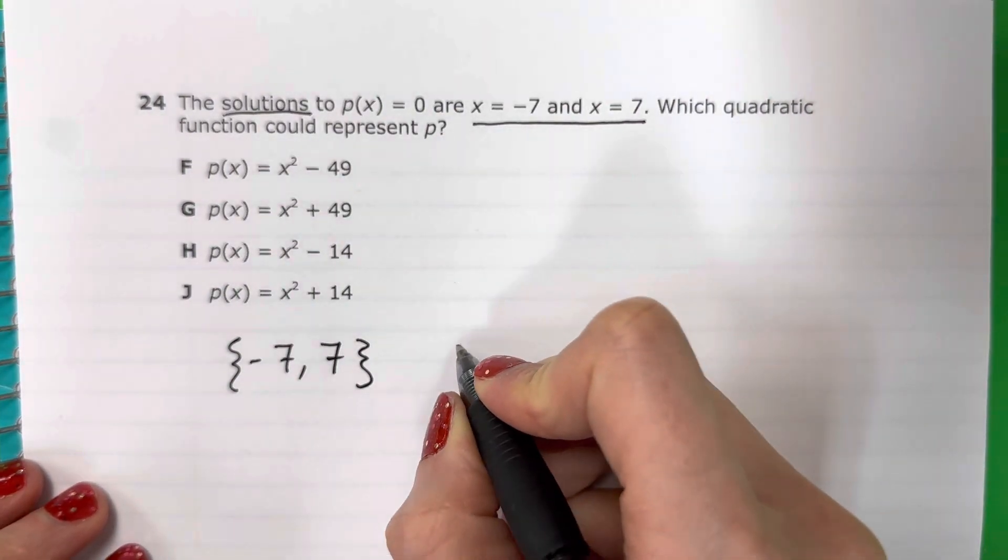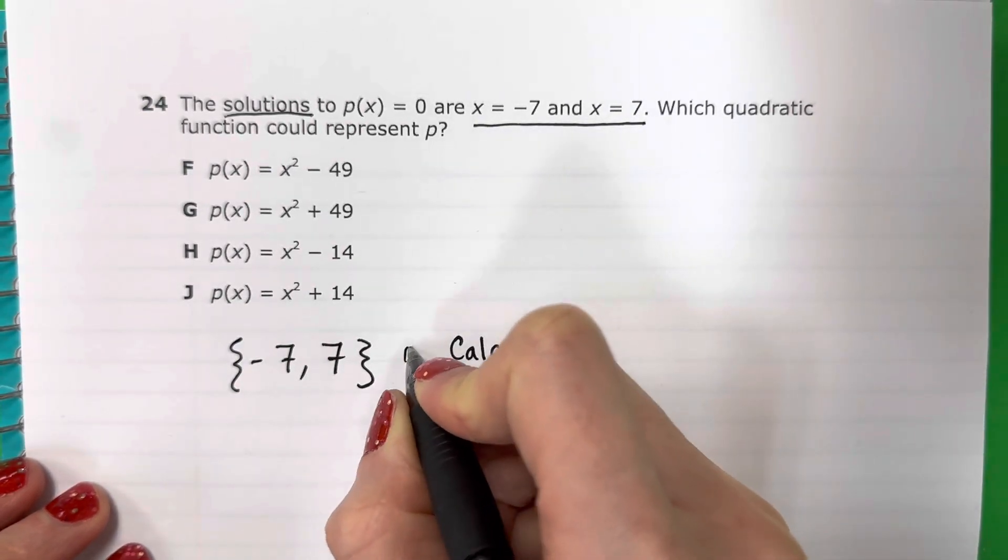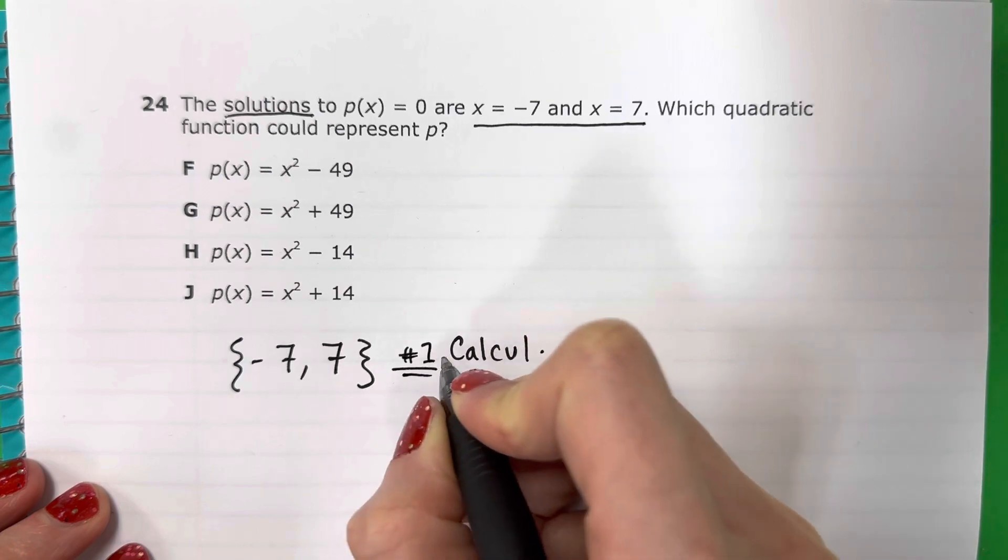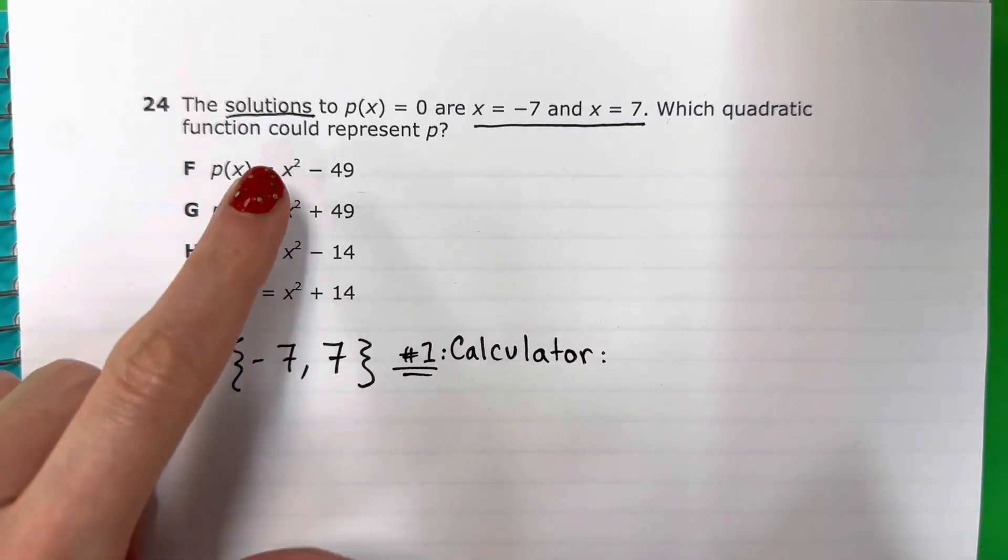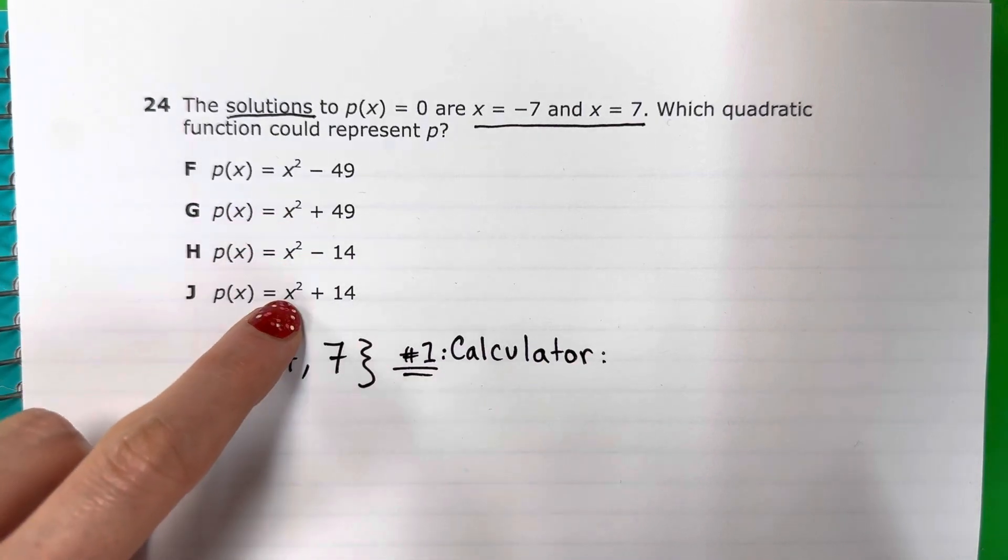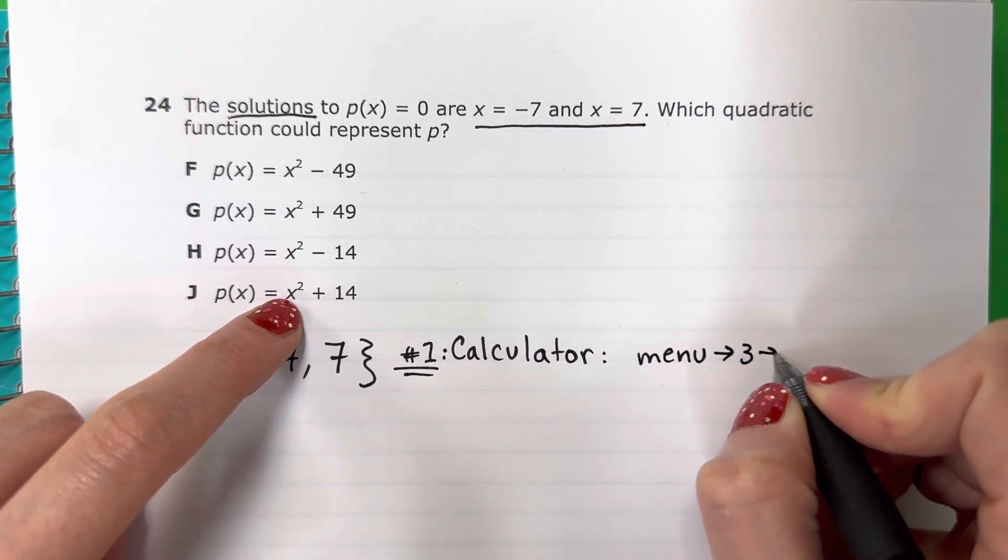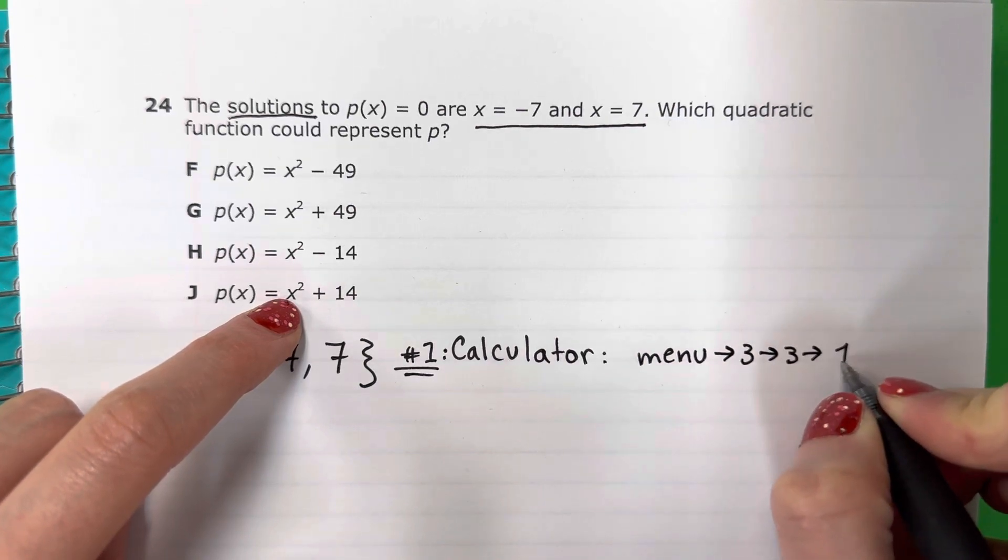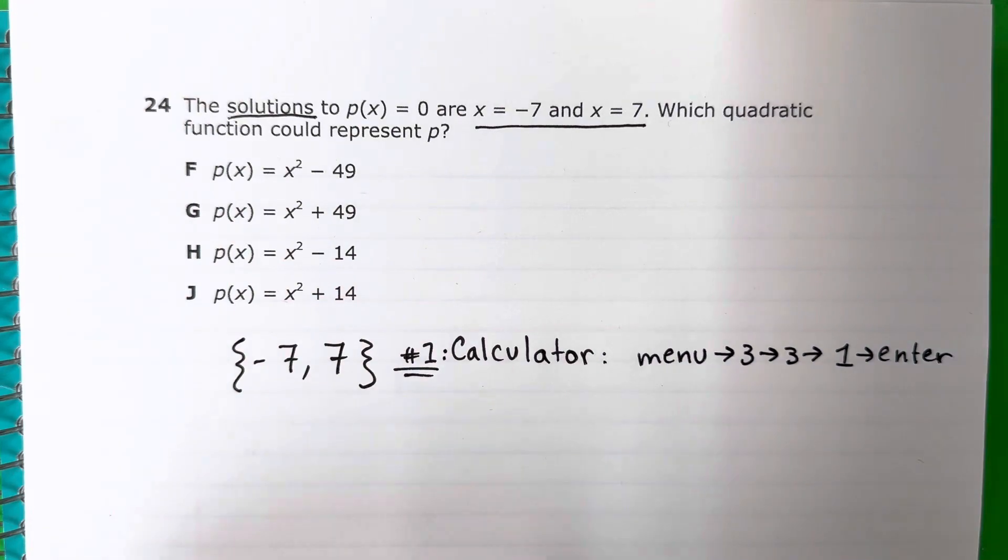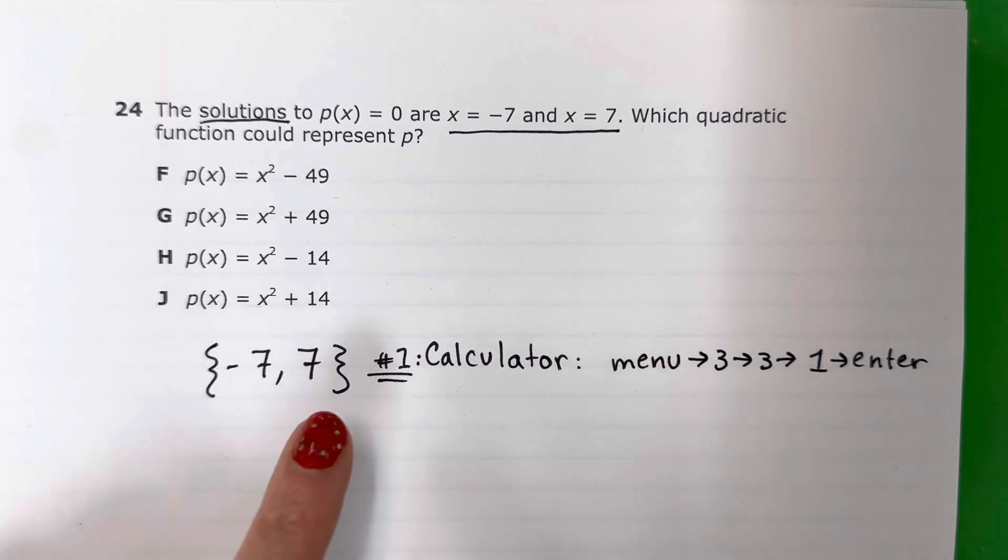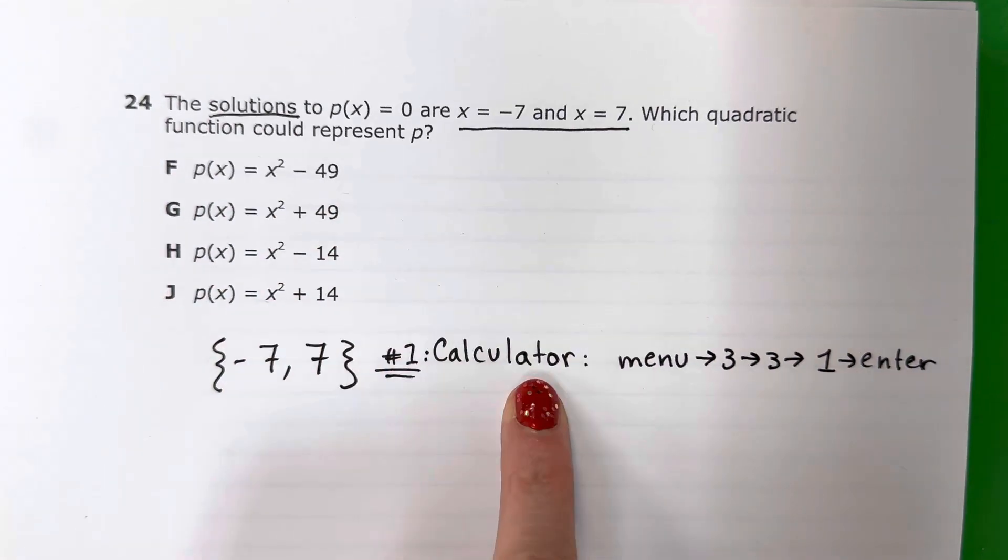The first way, la primera manera, is with the calculator. So number one, calculator. If you have a squared, you're going to do menu 3, 3, 1, enter. We're going to do them one by one in the calculator. Vamos a hacer uno por uno en la calculadora.